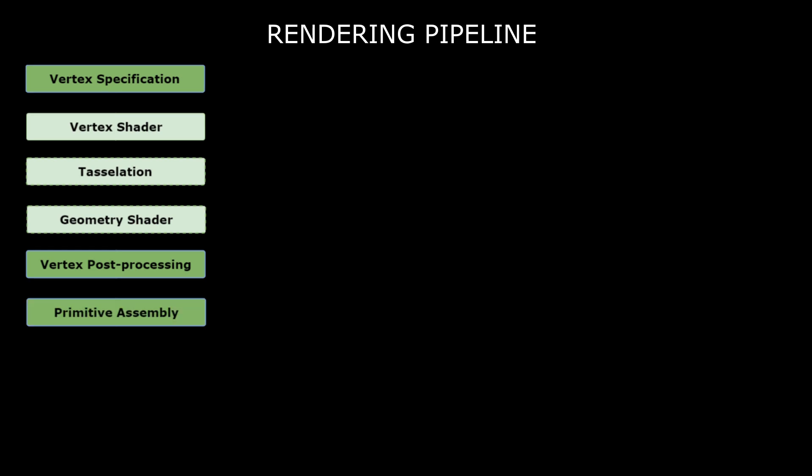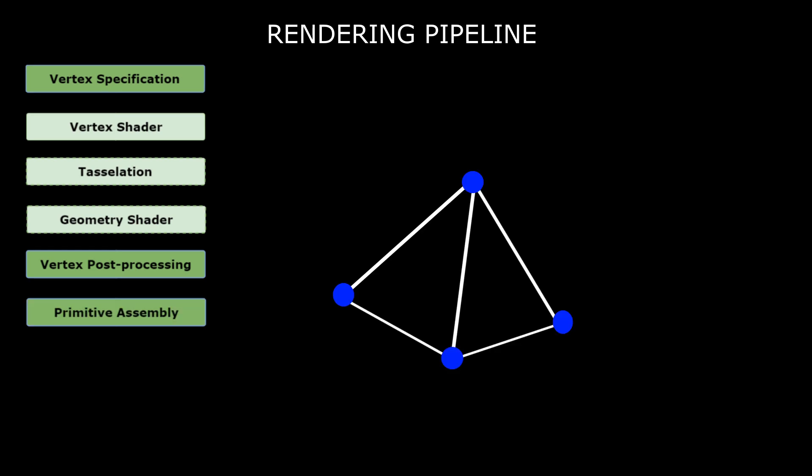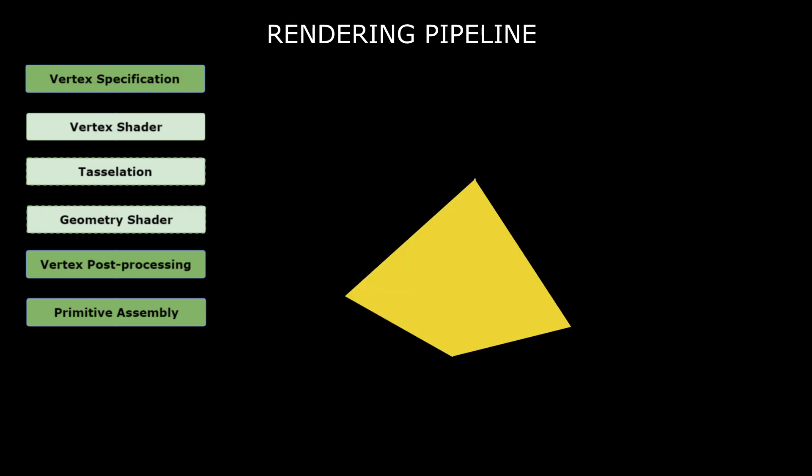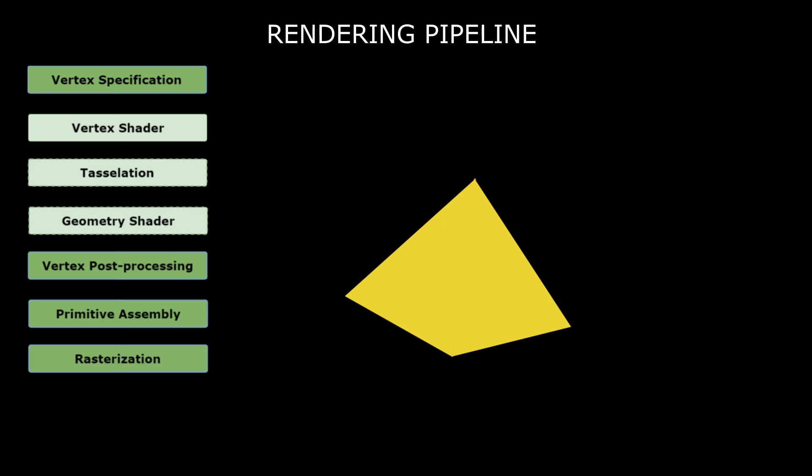Primitive assembly is the stage that collects all vertex data into an ordered sequence of simple primitives: lines, points, and triangles. Next is rasterization. Now that we have our scene transformed into view space consisting of simple primitives with data calculated, we can transform it into a 2D image consisting of fragments.